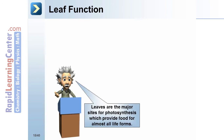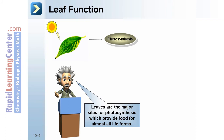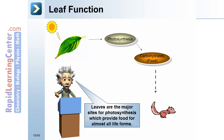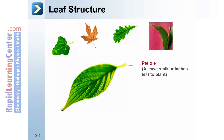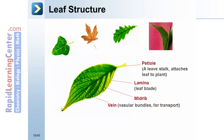Leaves are the major sites for photosynthesis, which provides food for almost all life forms by using light to create carbohydrates as food for animals. Leaf structure includes the petiole, a leaf stalk that attaches the leaf to the plant; the lamina, which is the leaf blade; the midrib; veins, which are vascular bundles for transport; and the leaf apex, the outer end of the leaf.